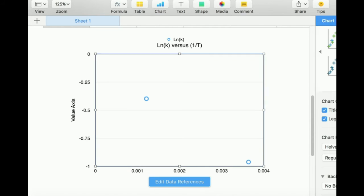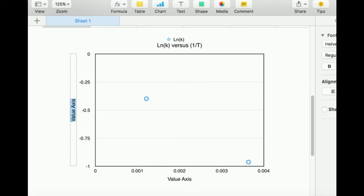This is going to be natural log of k versus 1 over the temperature. This right here is my natural log of the rate constant.